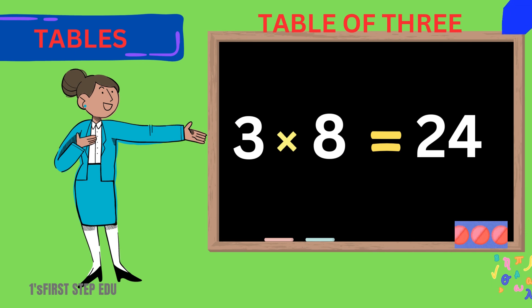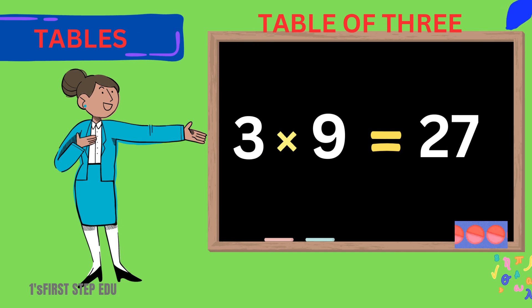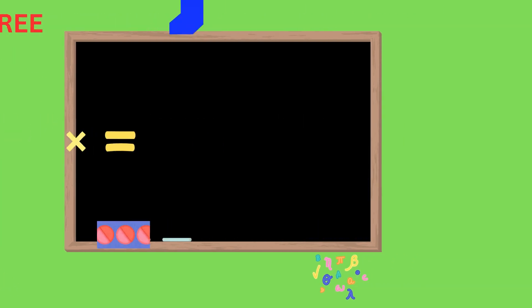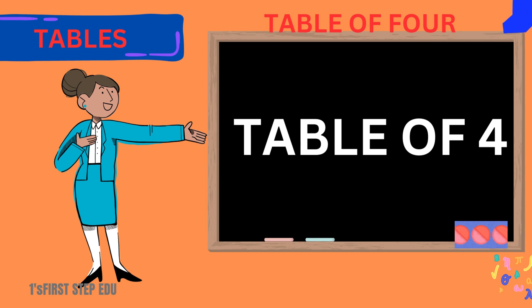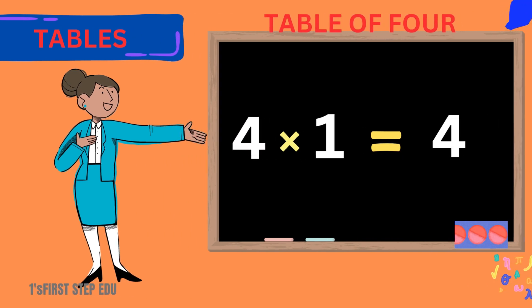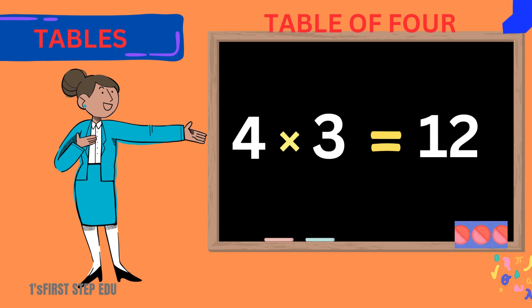3 fives are 15. 3 fives are 15. 3 sixes are 18. 3 sixes are 18. 3 sevens are 21. 3 sevens are 21. 3 eights are 24. 3 eights are 24. 3 nines are 27. 3 nines are 27. 3 tens are 30. 3 tens are 30. Table of 4.